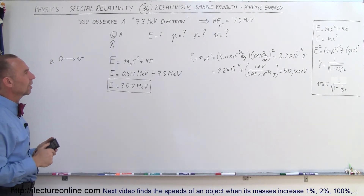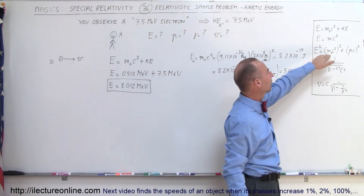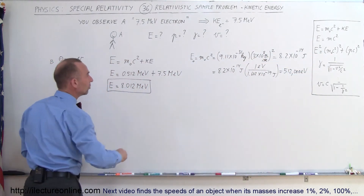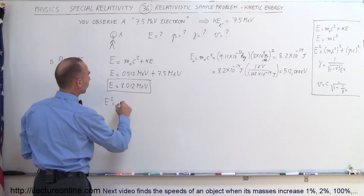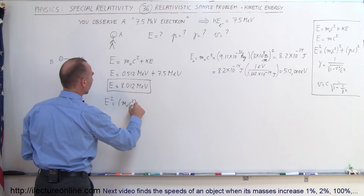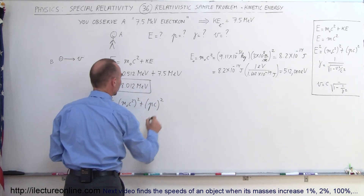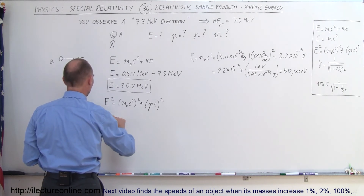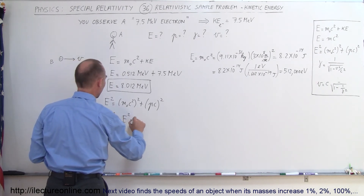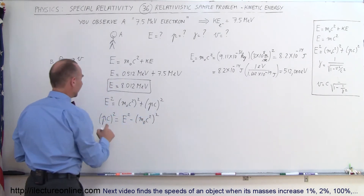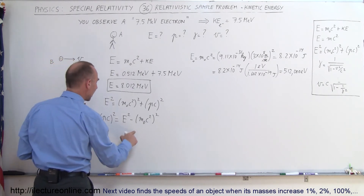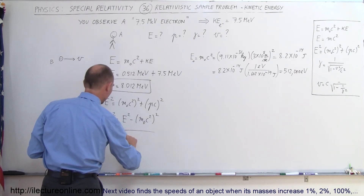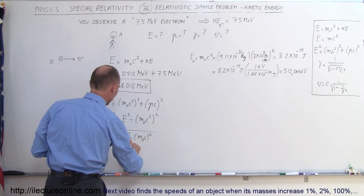Now, what is the momentum of this electron? We use the equation relating momentum to total energy and rest mass energy: total energy squared equals the rest mass energy squared plus the quantity momentum times c, squared. Solving for P, we get: P times c quantity squared equals total energy squared minus rest mass energy squared. Taking the square root and dividing by c, momentum equals the square root of total energy squared minus rest mass energy squared, all divided by c.